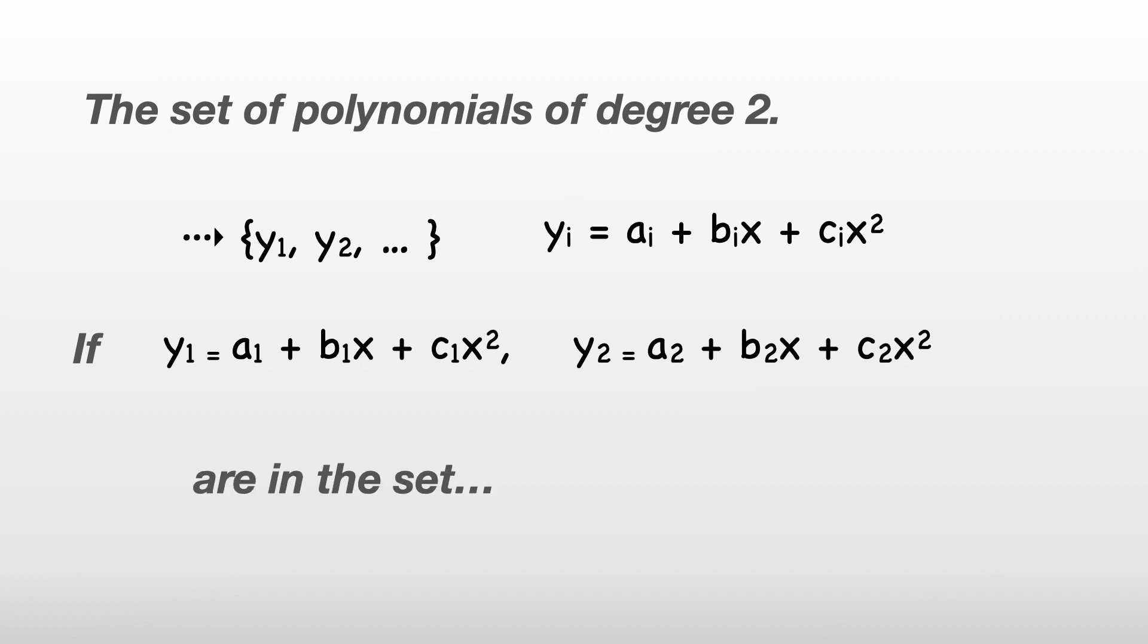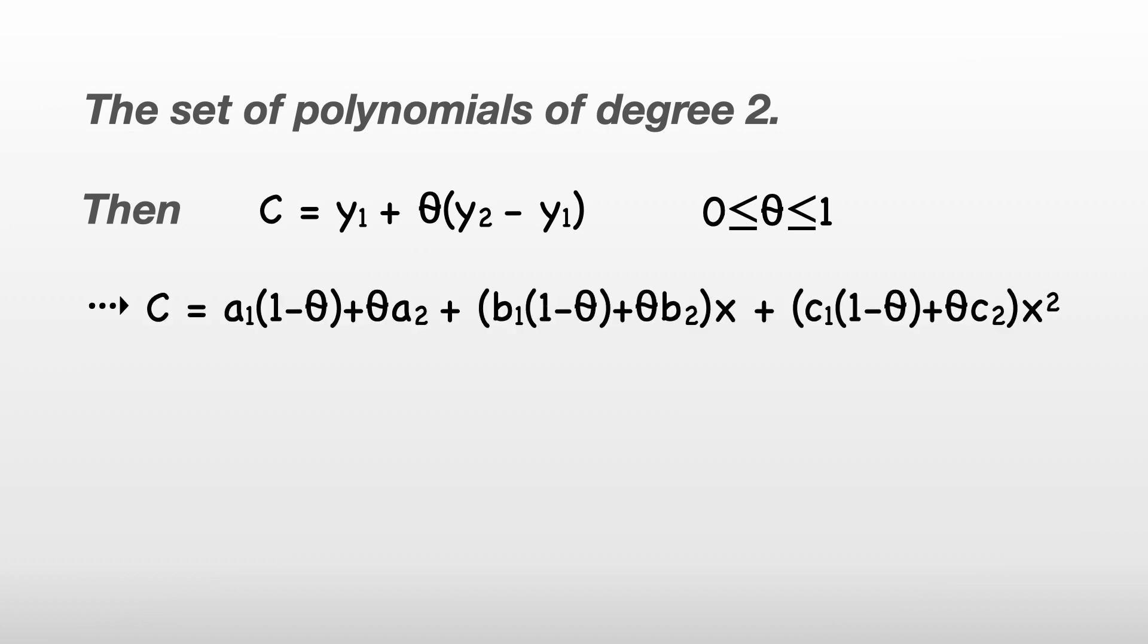If we take two elements from the set, let's say y1 and y2, then we can use the same equation as before to create a new element c, which is y1 plus theta times y2 minus y1, with theta being a number between 0 and 1 like before. Now, if we plug in our equations for y1 and y2, we end up with this horrible equation.